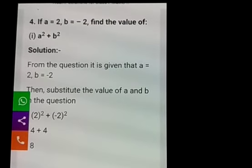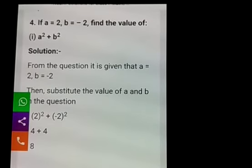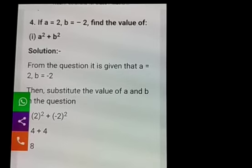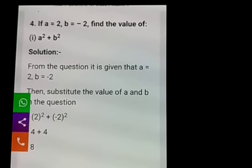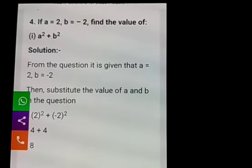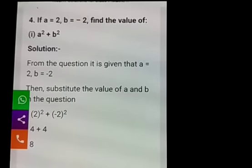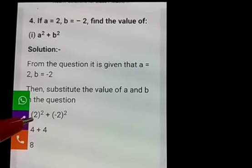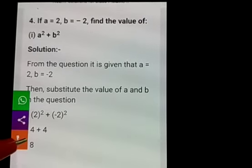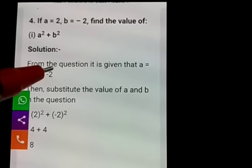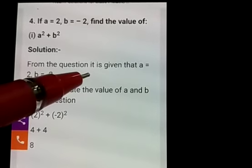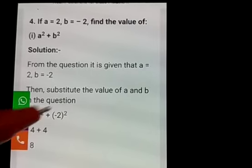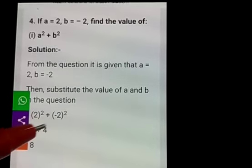Fourth main, first question: if a is equals to 2 and b is equals to minus 2, find the value of a squared plus b squared. Here we have two variables and for both the values are given. Substitute the value for both variables. In the place of a write 2, in the place of b write minus 2. 2 squared is 4; plus, minus 2 squared — minus into minus is plus — 2 twos are 4. So 4 plus 4 is 8.